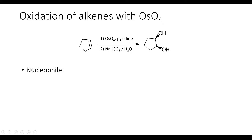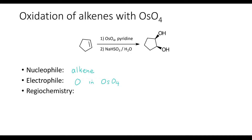The nucleophile in this reaction, as in the previous reactions, is the alkene. The electrophiles are the oxygens that are part of osmium tetroxide. The regiochemistry here does not matter because we are again adding identical substituents across the alkene.